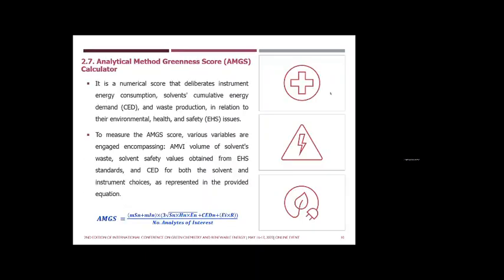The next assessment approach is Analytical Method Greenness Score, or AMGS Calculator. In this tool, different criteria are taken into consideration to assess and evaluate the method, including the energy consumed by the instruments, cumulative energy demand, waste production, and the relative environmental health and safety issues. As the score decreases, the greenness decreases.